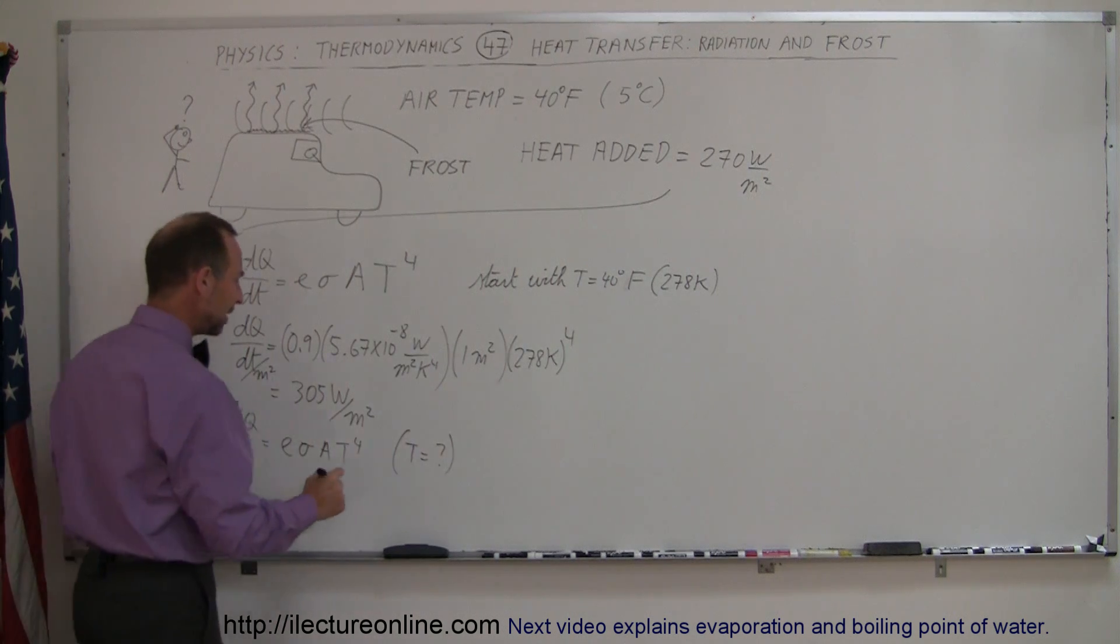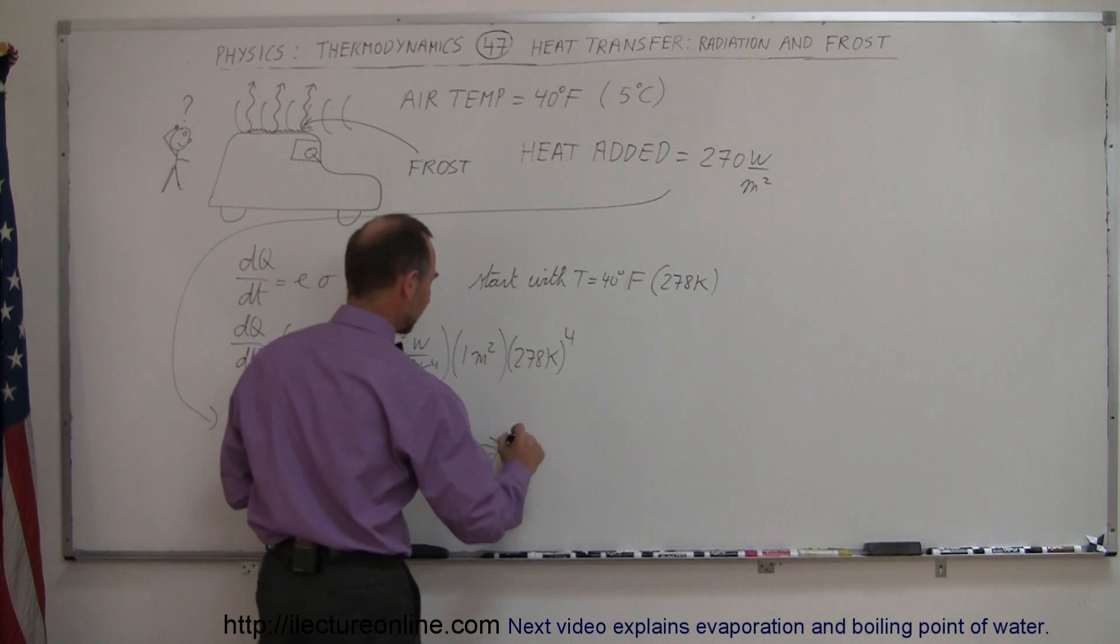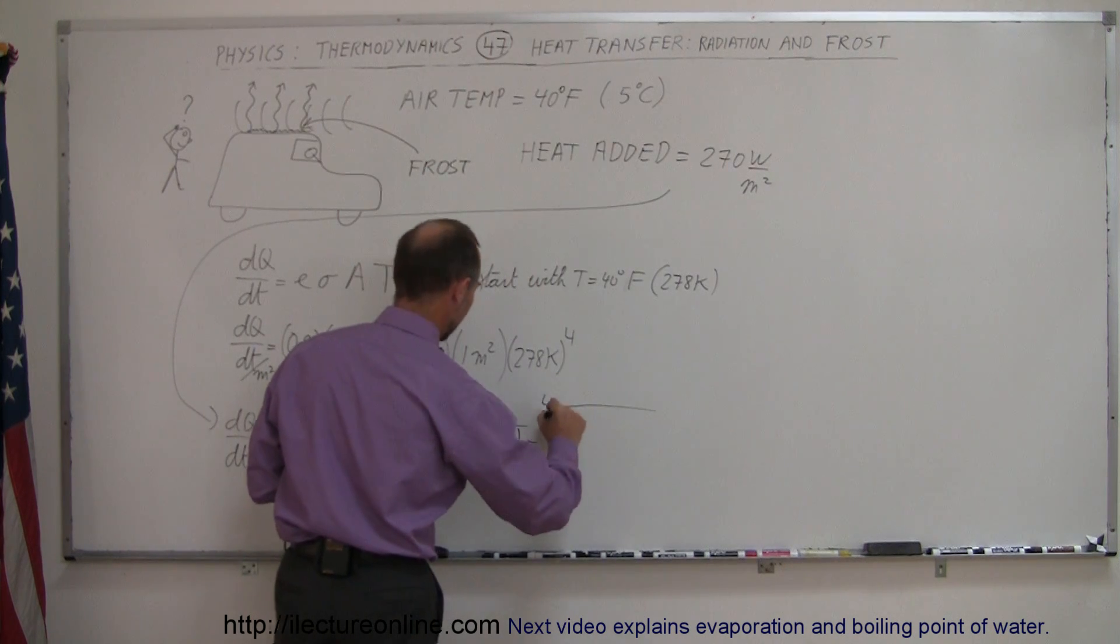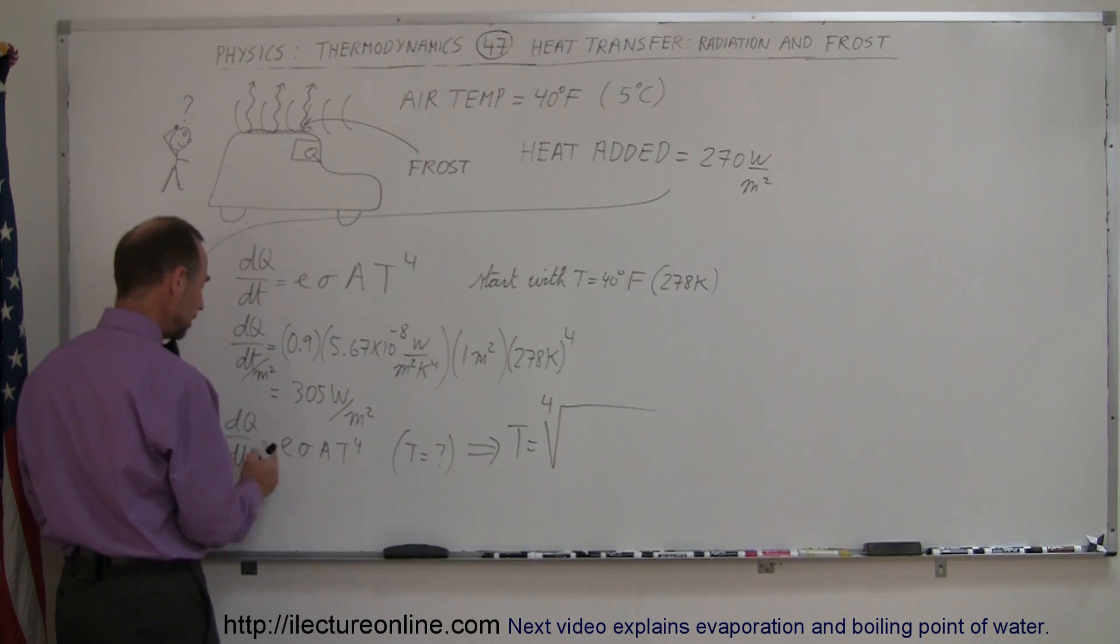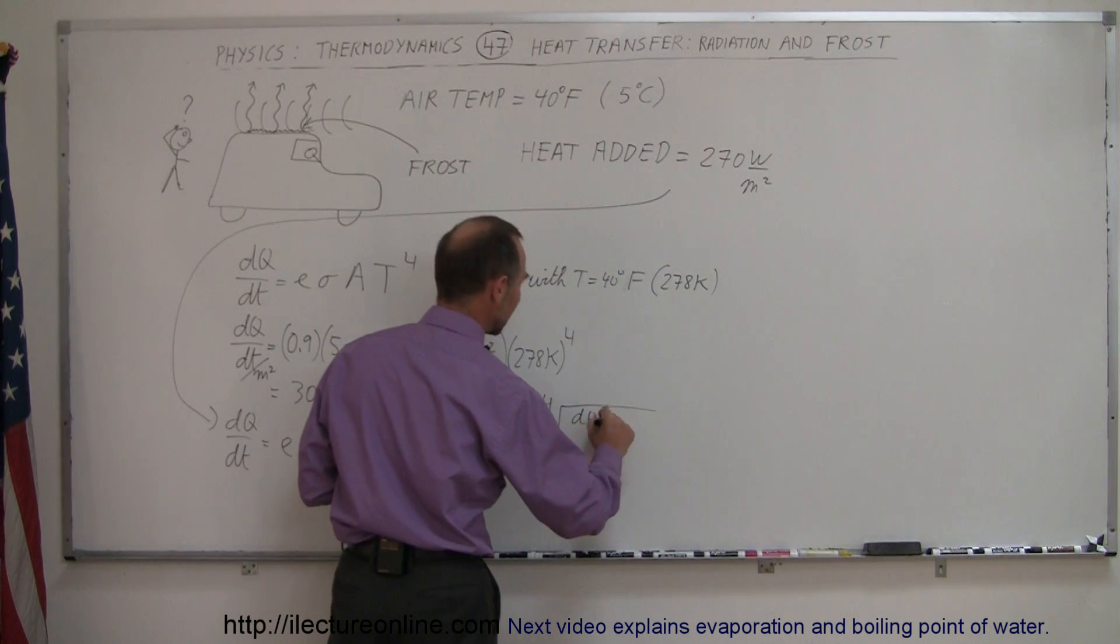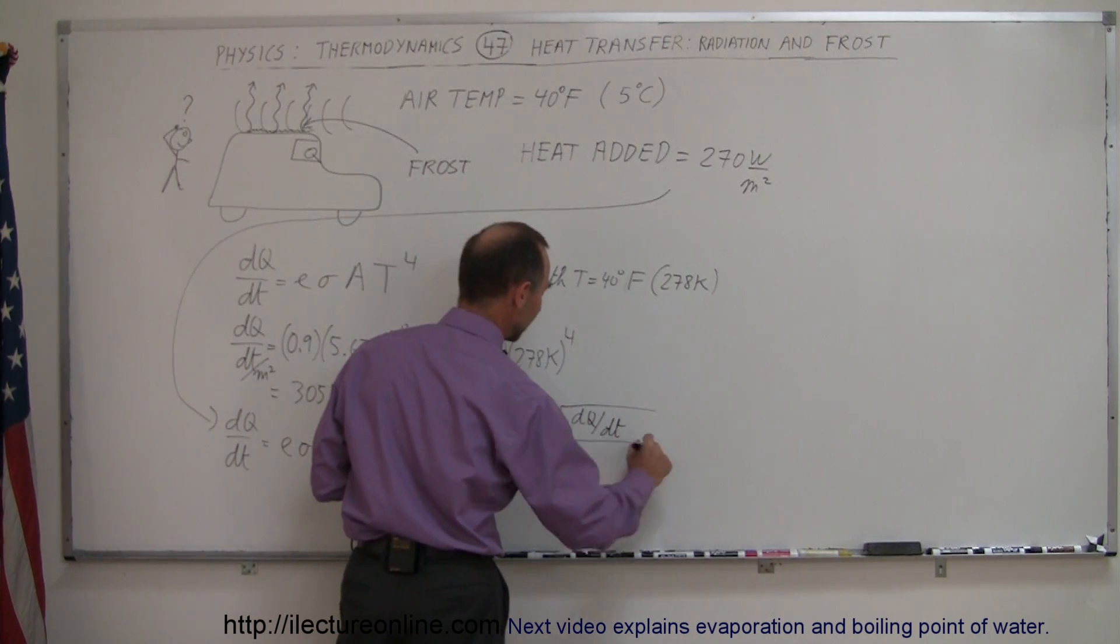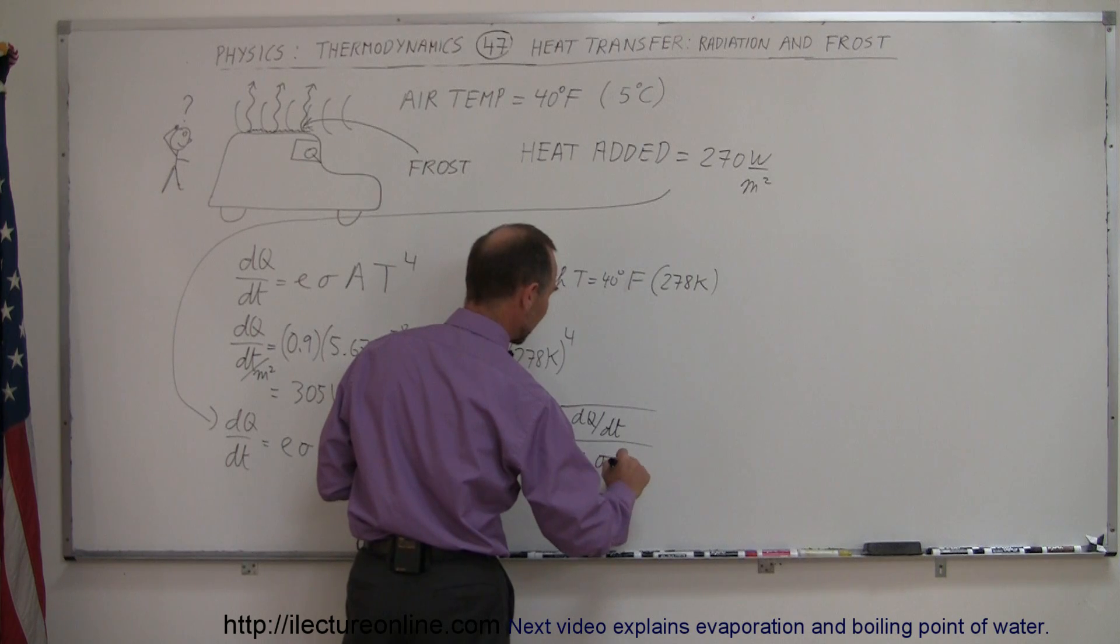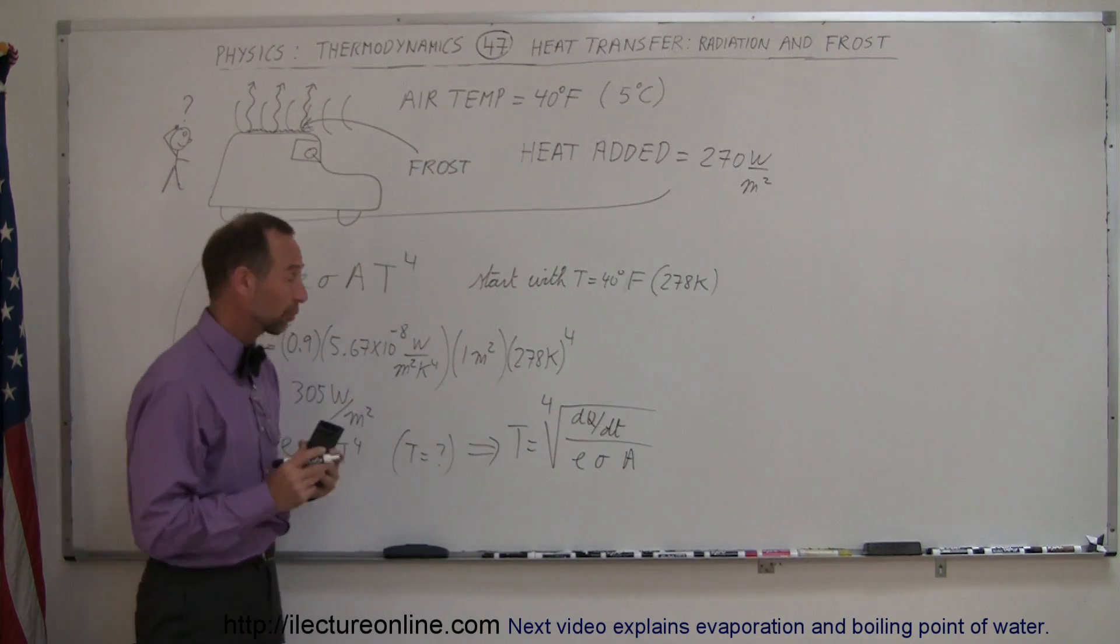That means our equation is now going to become: temperature equals the fourth root of dQ/dt divided by E sigma A. So that would be dQ/dt, the heat received from the air, divided by E sigma and the area. We're just going to consider one square meter surface.